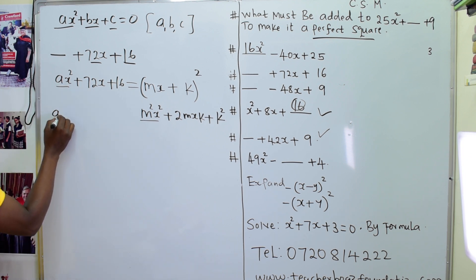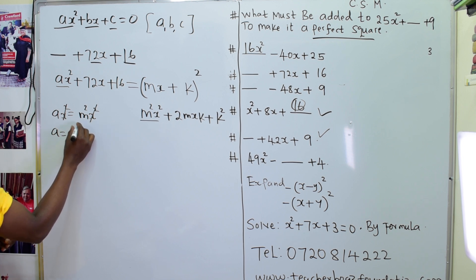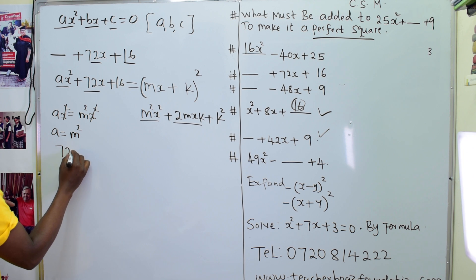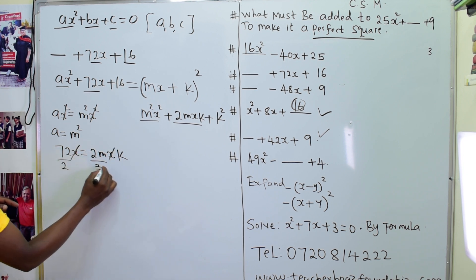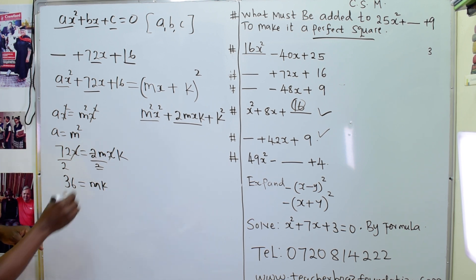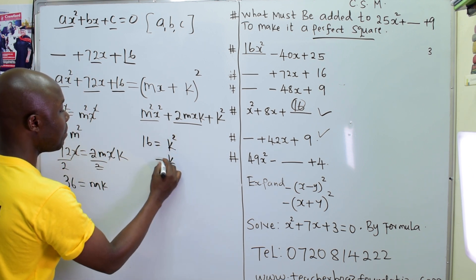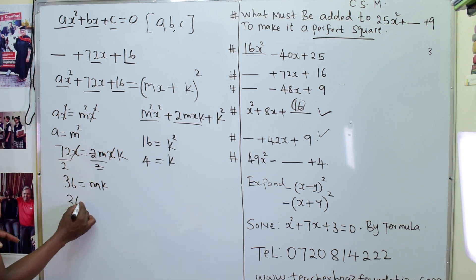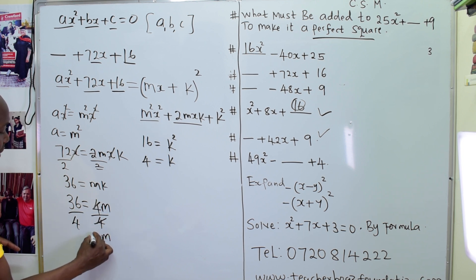Comparing first parts: ax squared equals m squared x squared, so a equals m squared. Comparing middle parts: 72x equals 2mxk; the x cancels and dividing both sides by 2 gives 36 equals mk. Comparing last parts: 16 equals k squared, so k equals 4.